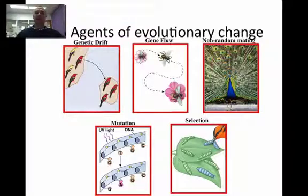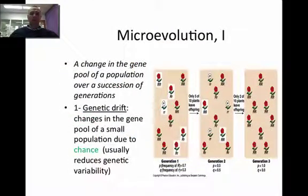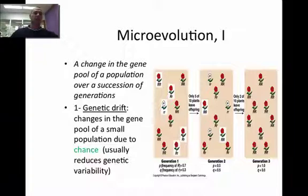There are five agents of evolutionary change, and these are the five things that could not be occurring for the Hardy-Weinberg theorem to be true. The first is genetic drift — it's a change in the gene pool of a population over a succession of generations. Genetic drift can only happen to small populations and occurs by chance.